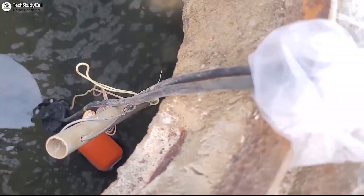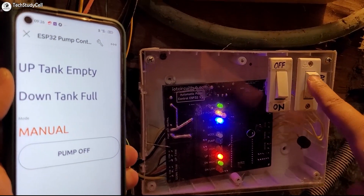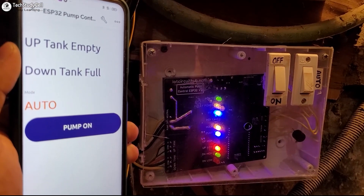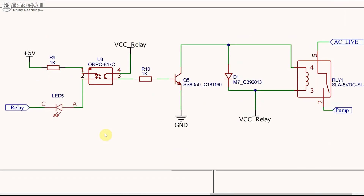So in this setup, if the distance between ESP32 and the float switch is very high, still ESP32 will always get the correct data from the float switch. Here you can see I have used an active low relay module. So if you make this GPIO pin low, then current can flow through this path, then the optocoupler will turn on. Also this LED will turn on, which will make this transistor turn on. And if this transistor is on, current can flow through this relay coil, so the relay will turn on.